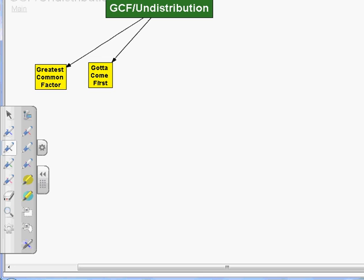Some problems you'll be asked to factor literally have multiple steps. If they do, you always want to look for this one first. So GCF is kind of a double meaning. It means greatest common factor as well as gotta come first.